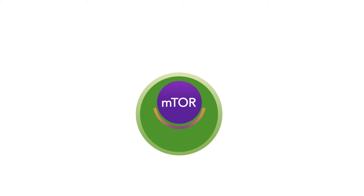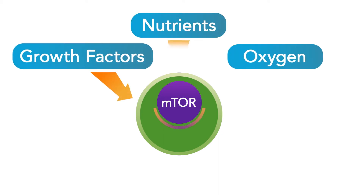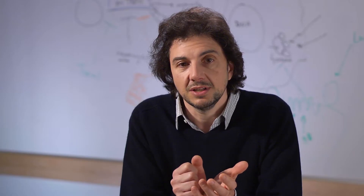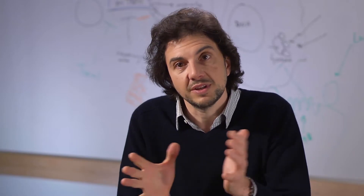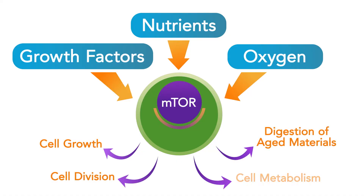mTOR is sort of like the CPU of a computer. It basically sits at the center and makes these complicated decisions in response to many, many different inputs. And when it makes that decision, mTOR then regulates every process that allows a cell to grow. So it's this meeting point between inputs and outputs.